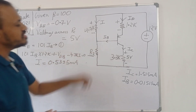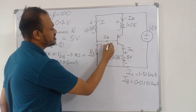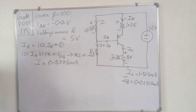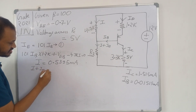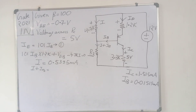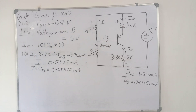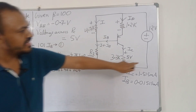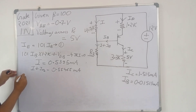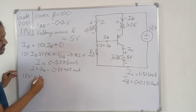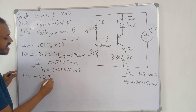The current through R2 is I plus IB. Finding the value of I plus IB, it equals 0.55465 milliamperes. Now we will apply KVL in the outer loop. We get 12 volt minus 1.2kΩ × IE...